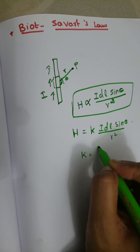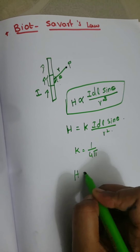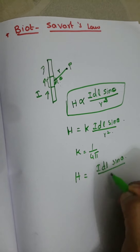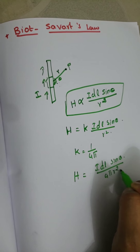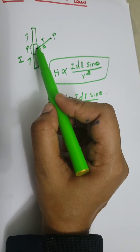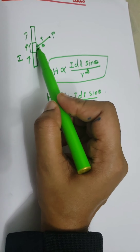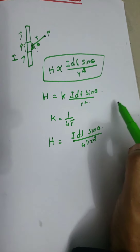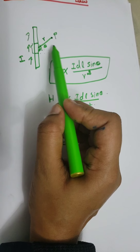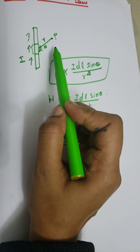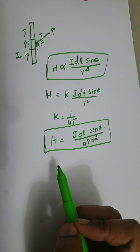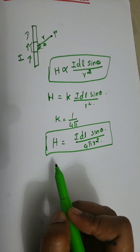If K is equal to 1 over 4 pi, then H becomes I DL sin theta divided by 4 pi R squared. From this equation, when point P is perpendicular to DL, theta is 90 degrees and sin 90 is 1, so the magnetic field is maximum at that point. This is the Biot-Savart law, used to find the magnetic field intensity.